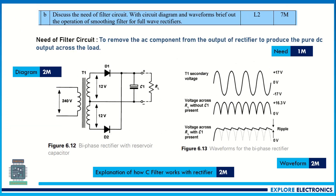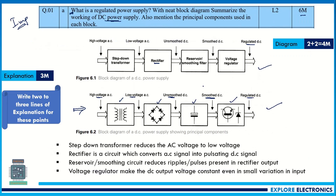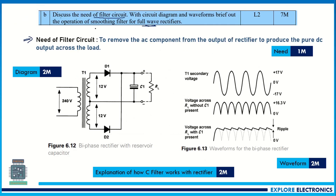The next question: discuss the need of a filter circuit with circuit diagram and waveform, and brief out the operation of a smoothing filter for a full wave rectifier. First write the need for a filter circuit. The reservoir or smoothing filter is required because the output of the rectifier is an unsmoothed DC signal. To remove the AC component from the rectifier output and produce a pure DC signal across the load, we need a filter.